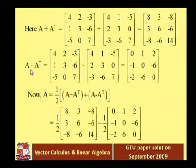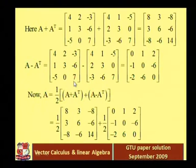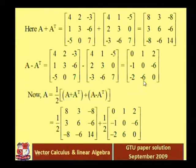Now let us find A minus A transpose. That equals: 4 minus 4 = 0; 2 minus 1 = 1; minus 3 minus (minus 5) = 2; 1 minus 2 = minus 1; 3 minus 3 = 0; minus 6 minus 0 = minus 6; minus 5 minus (minus 3) = minus 2; 0 minus (minus 6) = 6; and 7 minus 7 = 0.